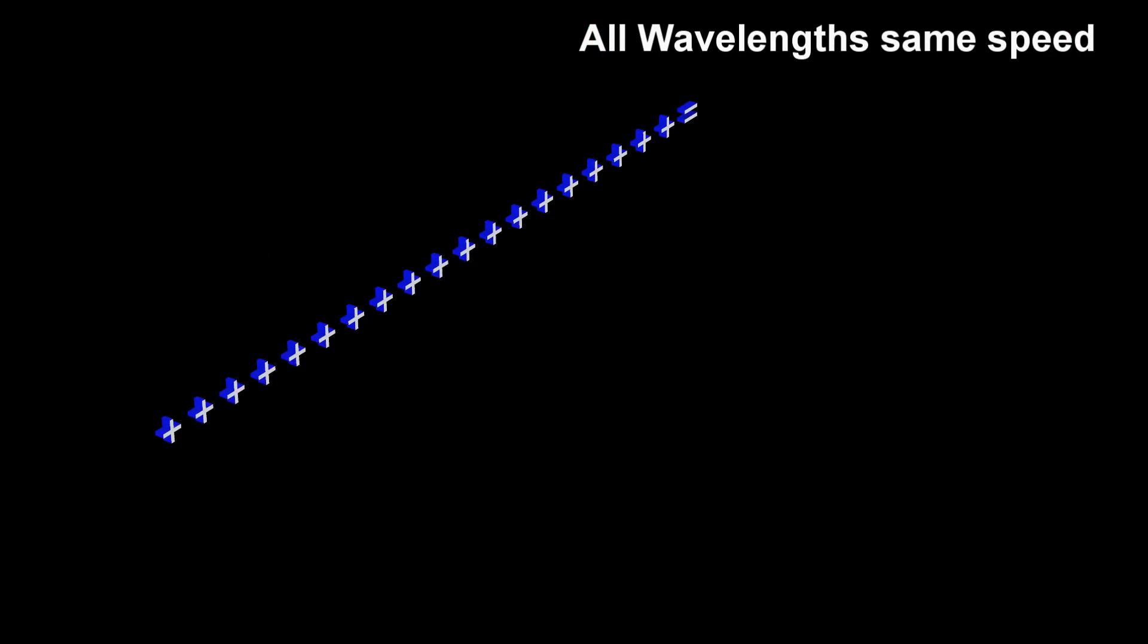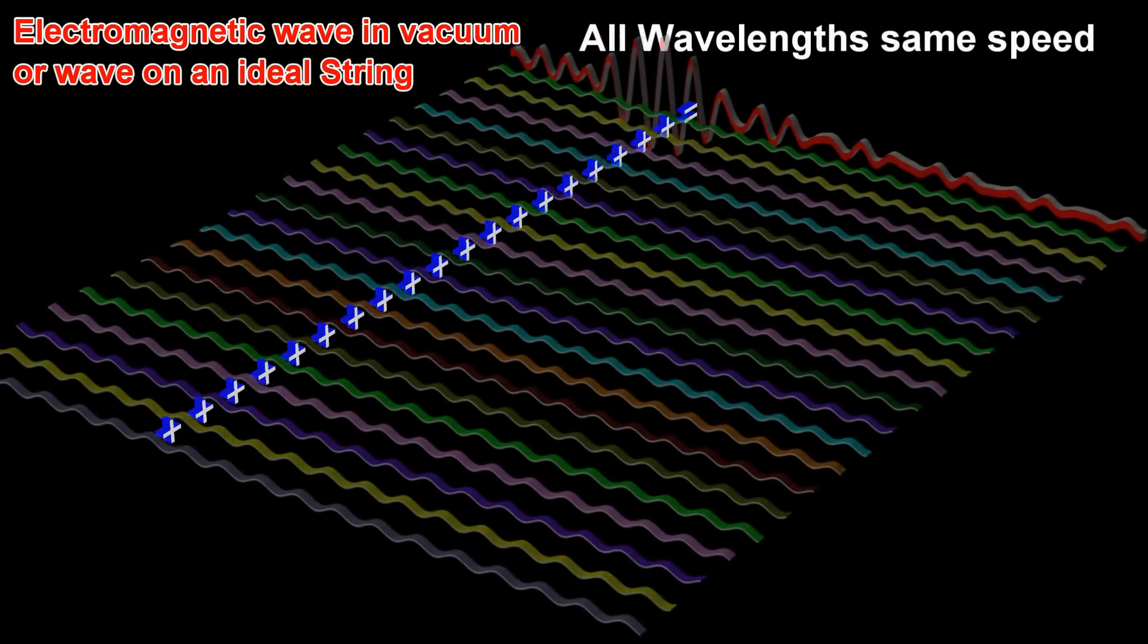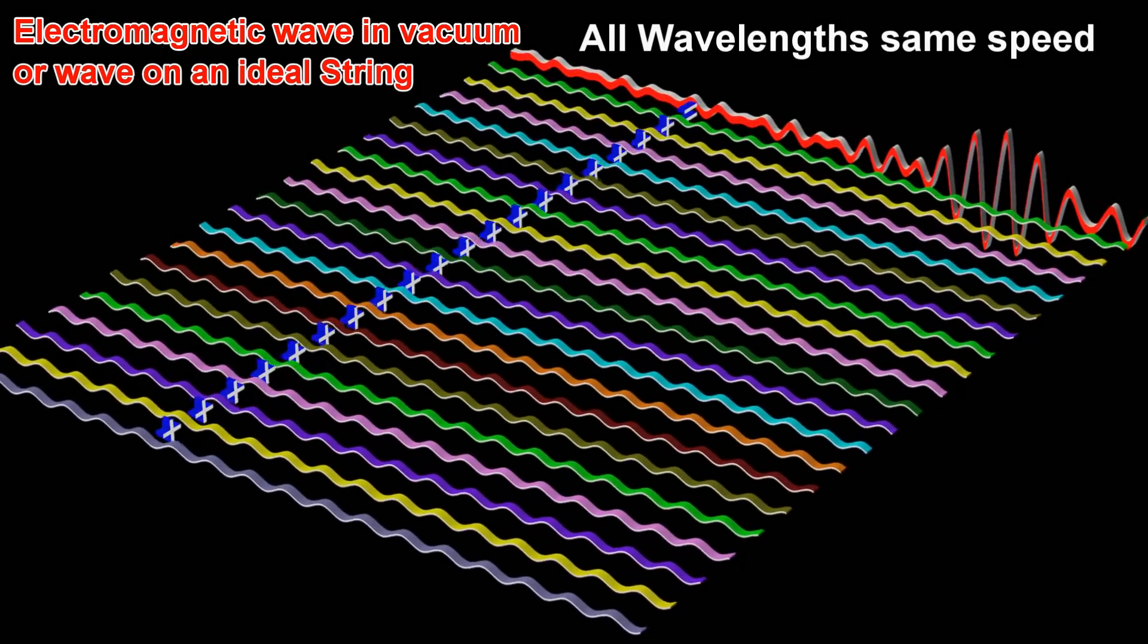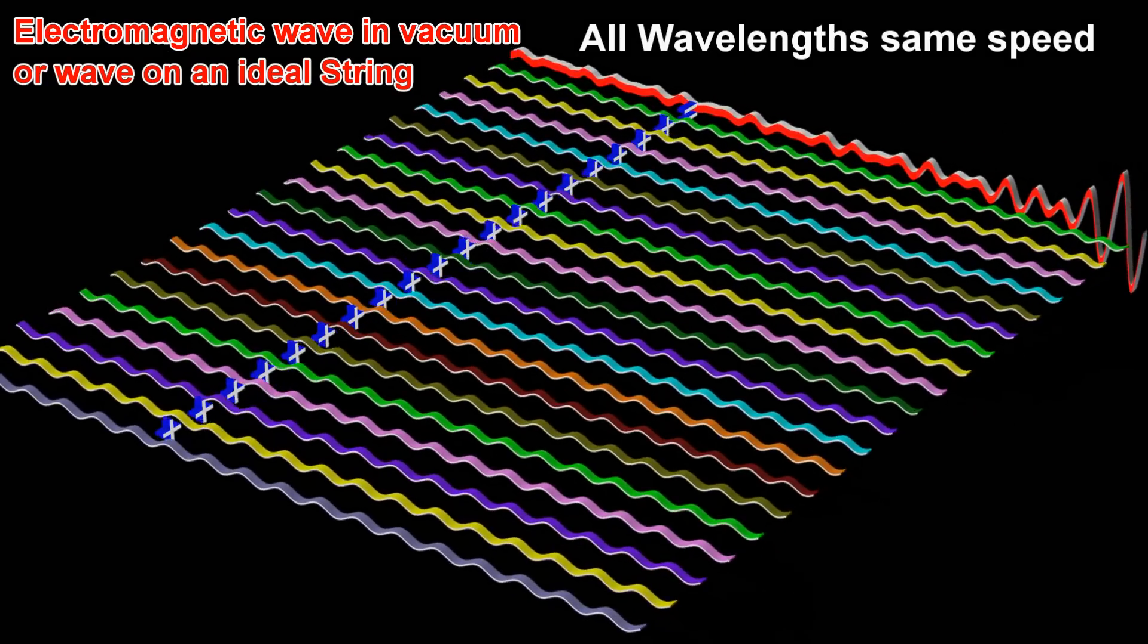Examples of waves where all the different wavelengths have the same phase velocity are electromagnetic waves through a vacuum, and waves on an ideal string.